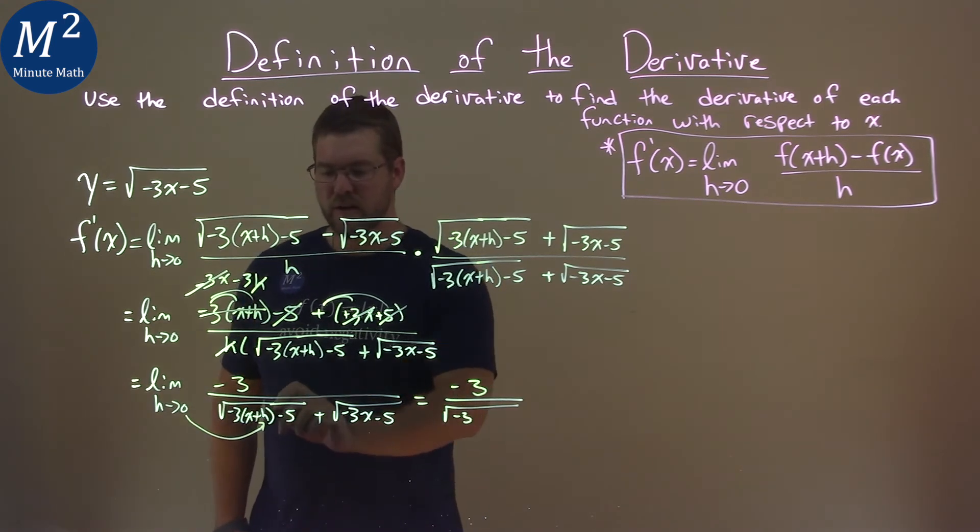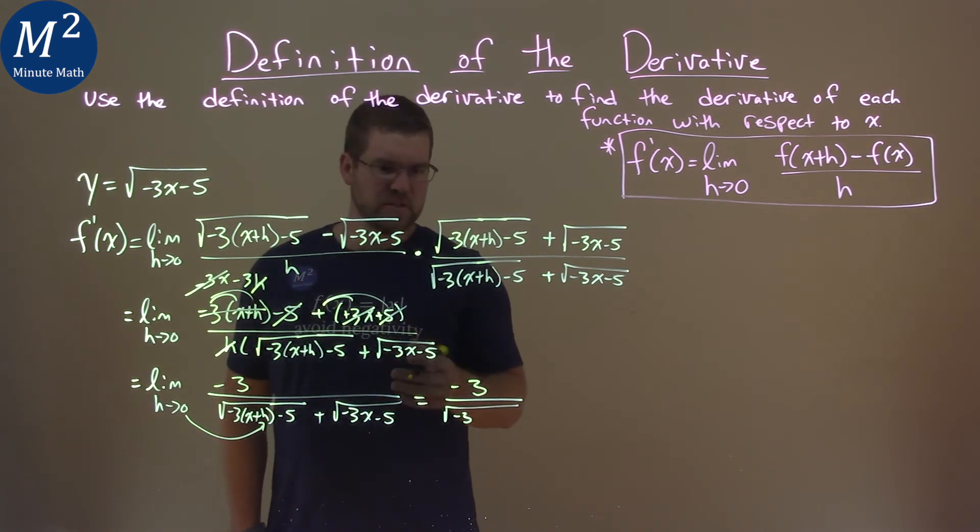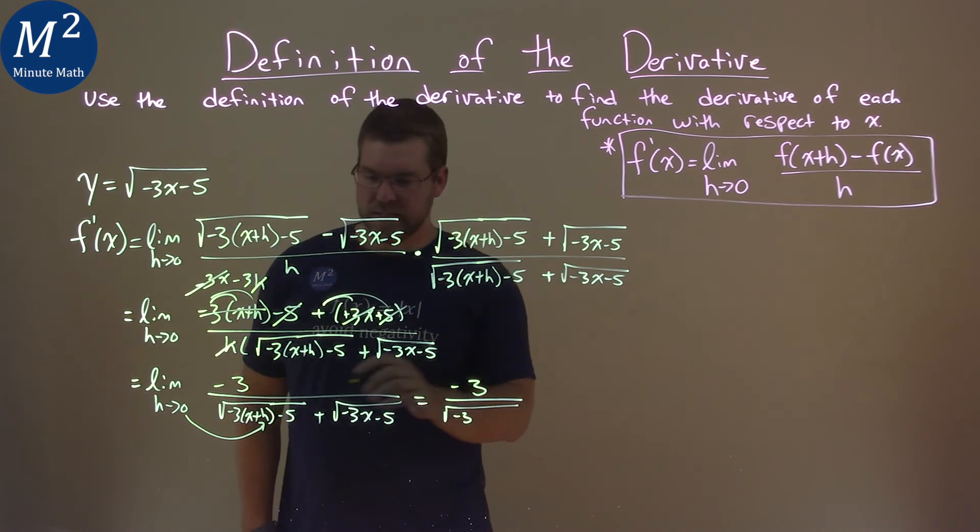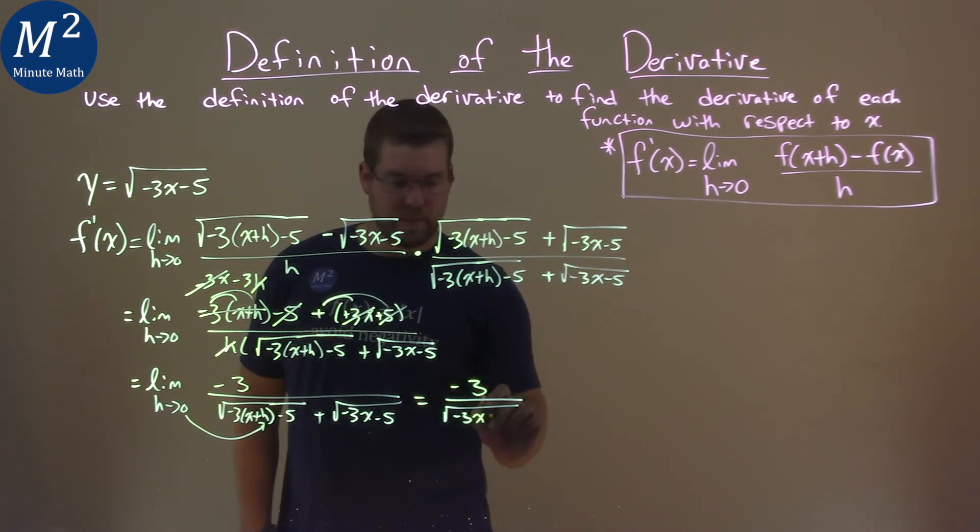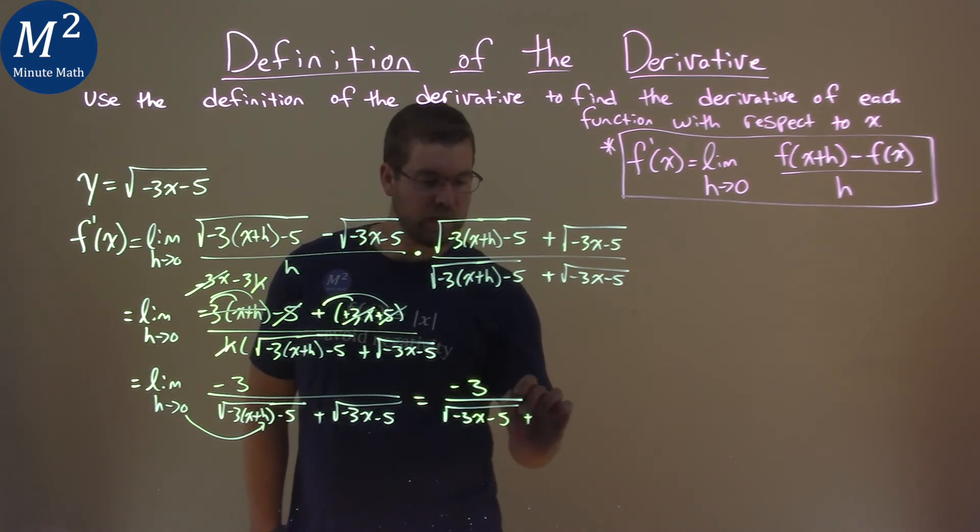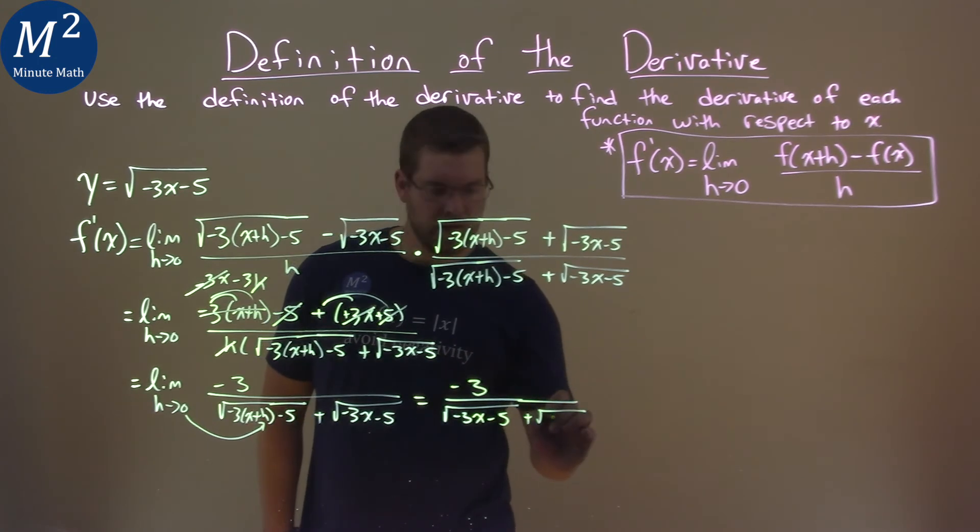That's the only one that goes in right there. And 0 is just 0. So x plus 0 is x actually. So, negative 3x minus 5 plus, well, the same thing over again, square root of negative 3x minus 5.